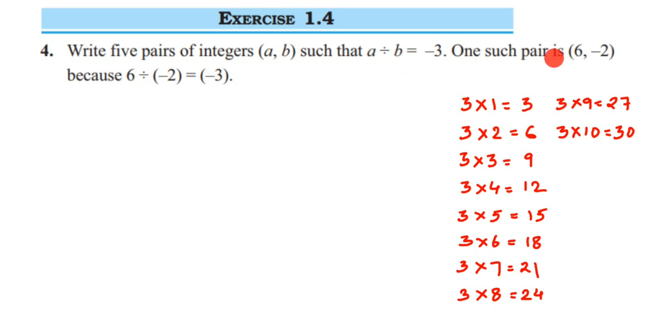One such pair is (6, -2) because 6 divided by -2 is -3. Here, in place of a and b, a should be the greater number—a should be the dividend and b should be the divisor. When you divide these two numbers, you should get -3. The 3 has a negative sign.